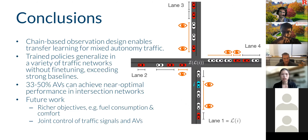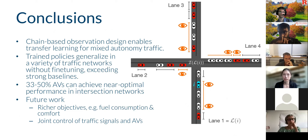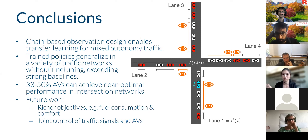In conclusion, the chain-based observation design enables more systematic study of transfer learning for mixed autonomy traffic. We find that trained policies generalize across a variety of traffic networks without fine-tuning — zero-shot — and in many cases, such as intersection settings, exceed strong baselines. We find that 33 to 50% autonomous vehicles can achieve near-optimal performance in intersection networks, comparable to signalized control. Future work includes considering richer objectives and joint control of traffic signals and autonomous vehicles.